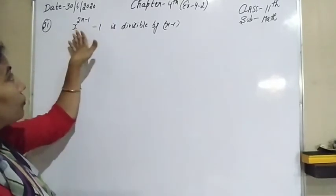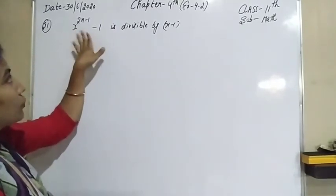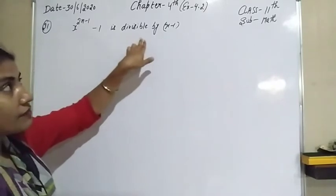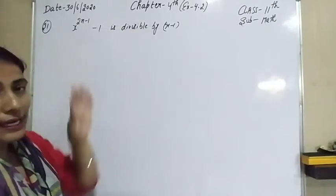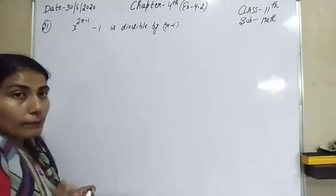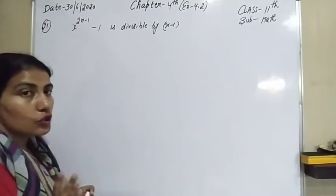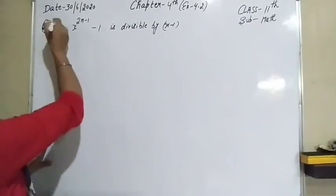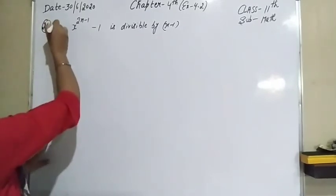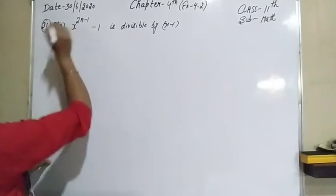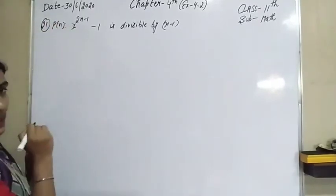We have to prove x raised to the power 2n minus 1, minus 1, is divisible by x minus 1 for all n belonging to the natural numbers. So first, let P(n) be this statement.